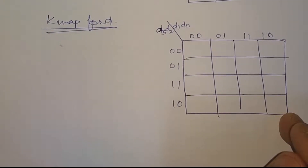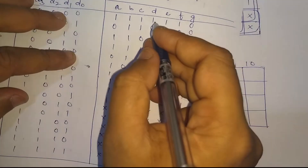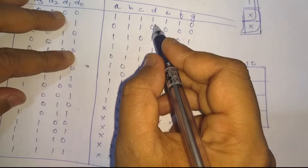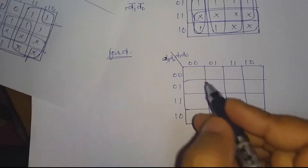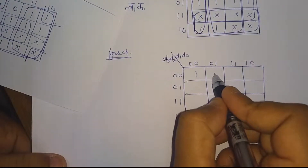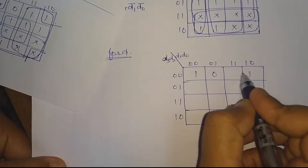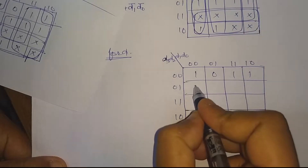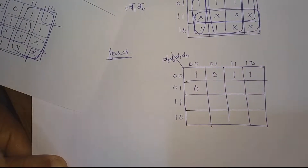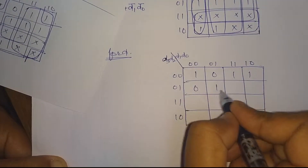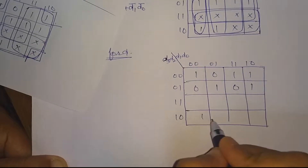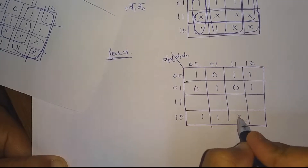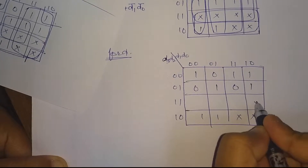For segment D, the K-map values are 1, 0, 1, 1, 0, 1, 0, 1, with the remaining entries as don't care conditions.